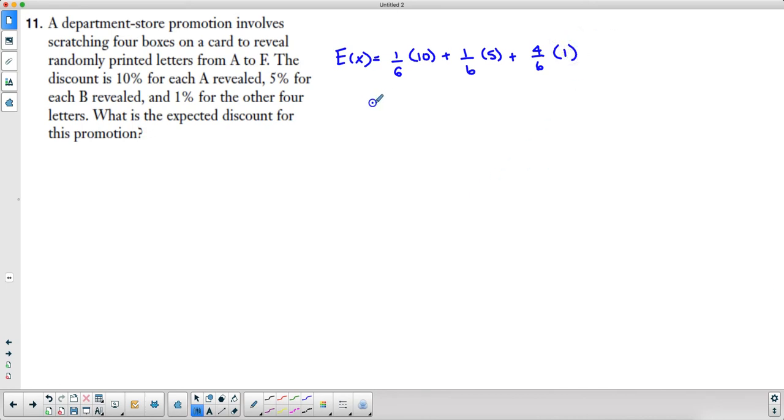Now if we put all this together, that's going to give me 10/6 plus 5/6 plus 4/6. So I'm going to write them all with the common denominator of 6, which means that it's 19/6 is the expected value.